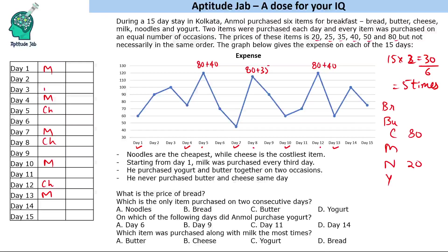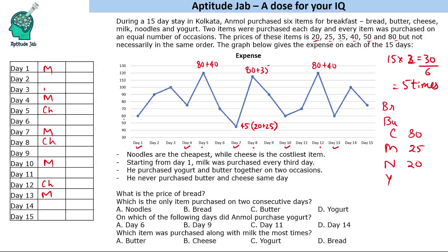Now let us also look at the lowest point, which is 45. On that day you are getting 45, which is possible only with 20 plus 25. We know 20 is noodles, so this means milk is 25 rupees — we have figured out that milk costs 25.